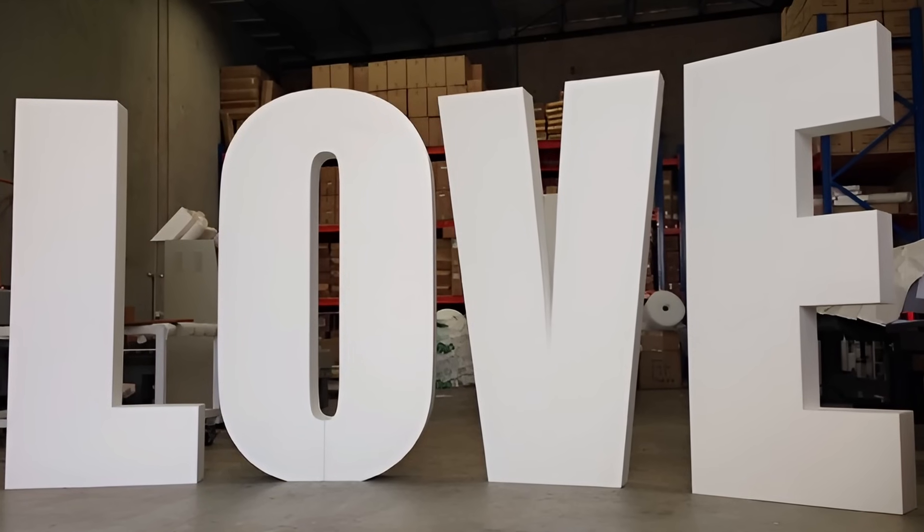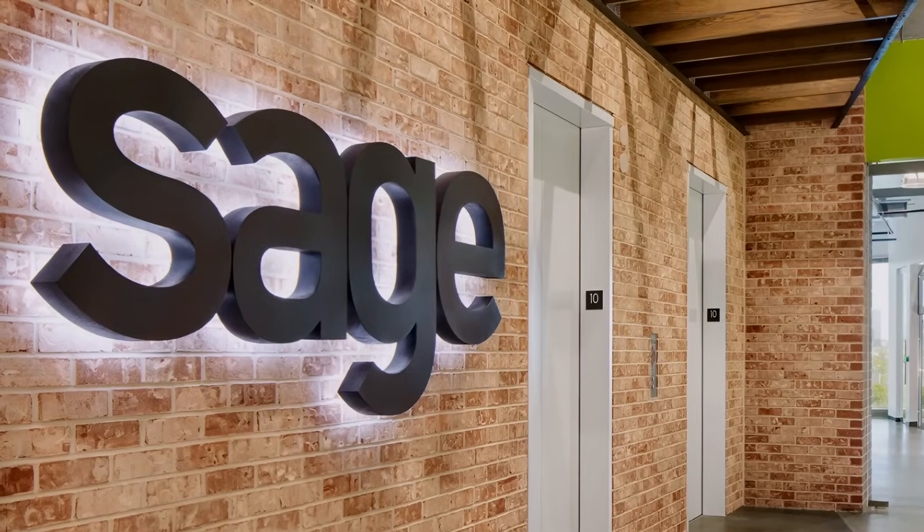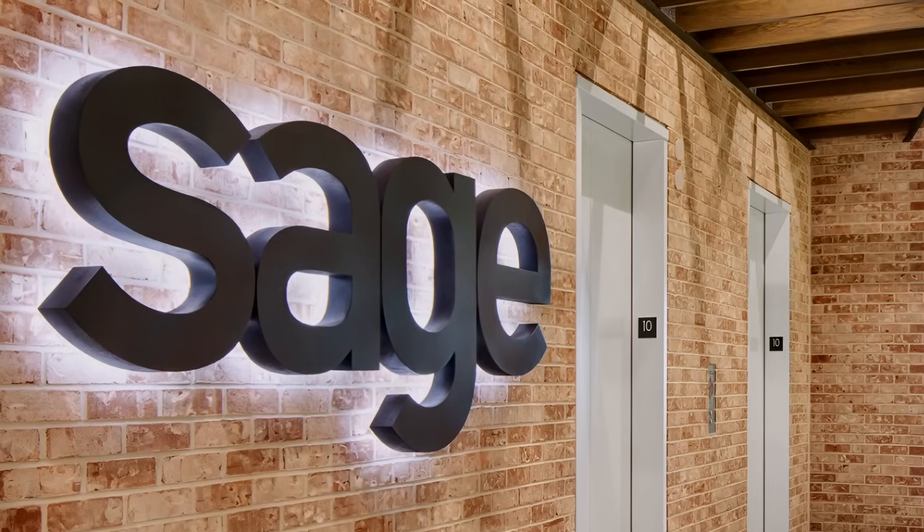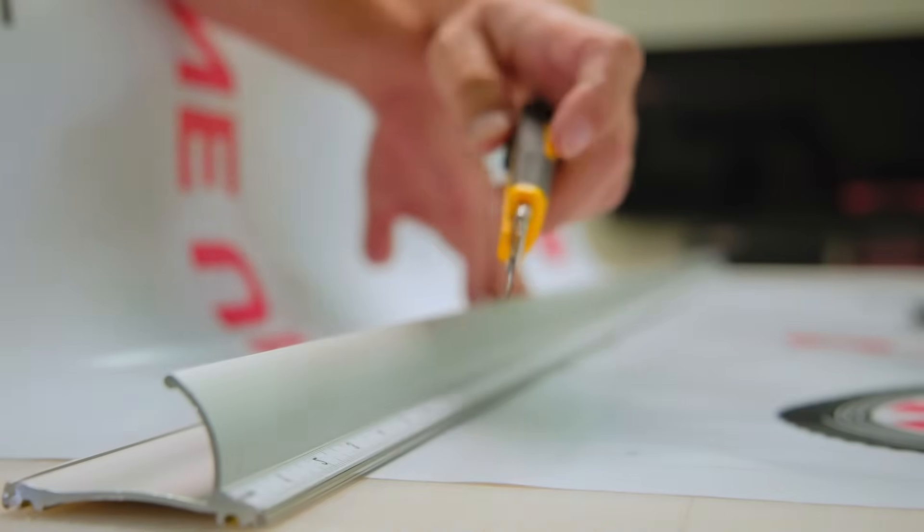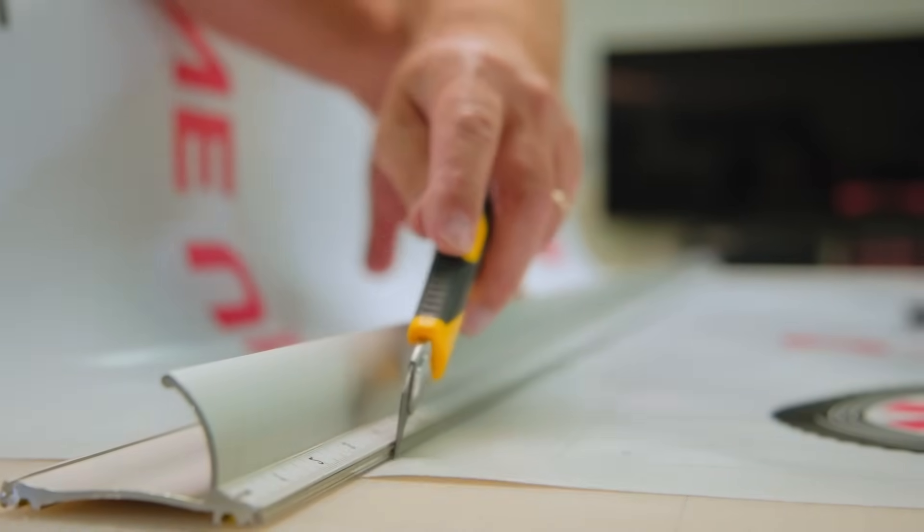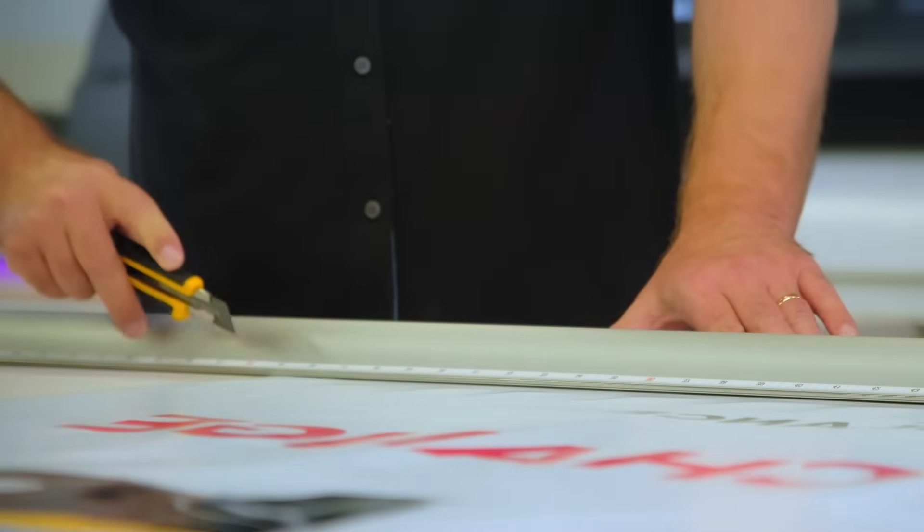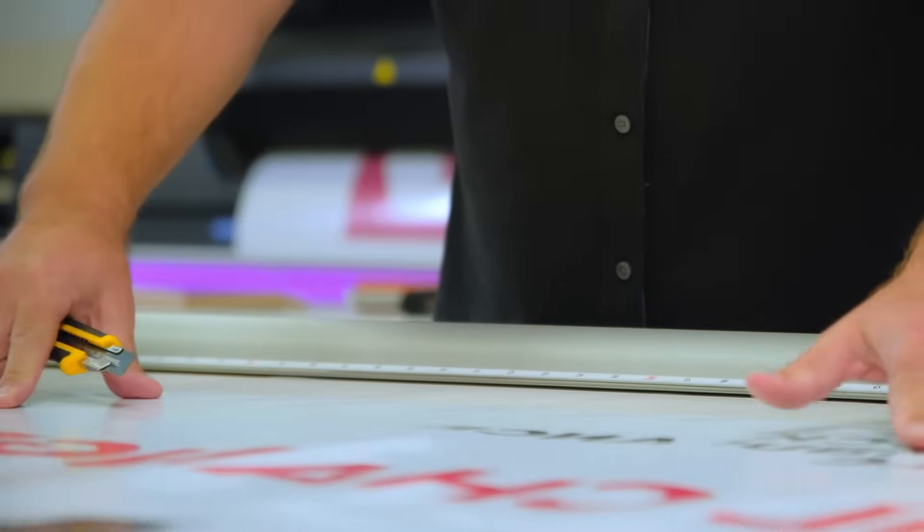This material is often used for signage, because it's easier to work with and repair than signs made from other materials, such as film. Film, for example, can shrink over time, and then you have to remove it from the base. And reattaching the letters takes a lot of time.